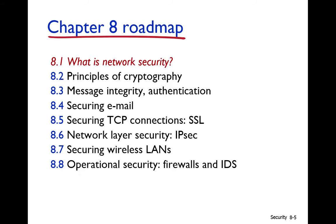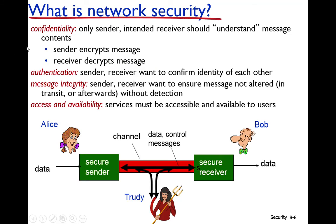What is network security? Network security is defined by four terms. The first term is confidentiality. Confidentiality means that when a sender sends a message — suppose Alice is sending a message to Bob — then only the sender and the intended receiver should understand the message content. The message should not be disclosed to anyone else.